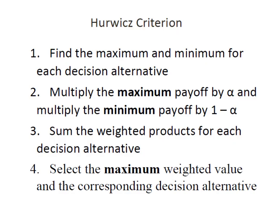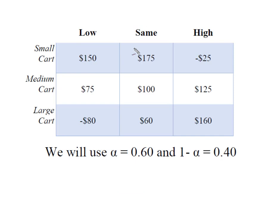The way I'm going to proceed under this criterion is I'm first going to find the maximum and minimum payoff for each decision alternative. I will then multiply the maximum payoff by alpha and the minimum payoff by 1 minus alpha. I'm going to sum those weighted products for each decision alternative and then select the maximum weighted value and the corresponding decision alternative.